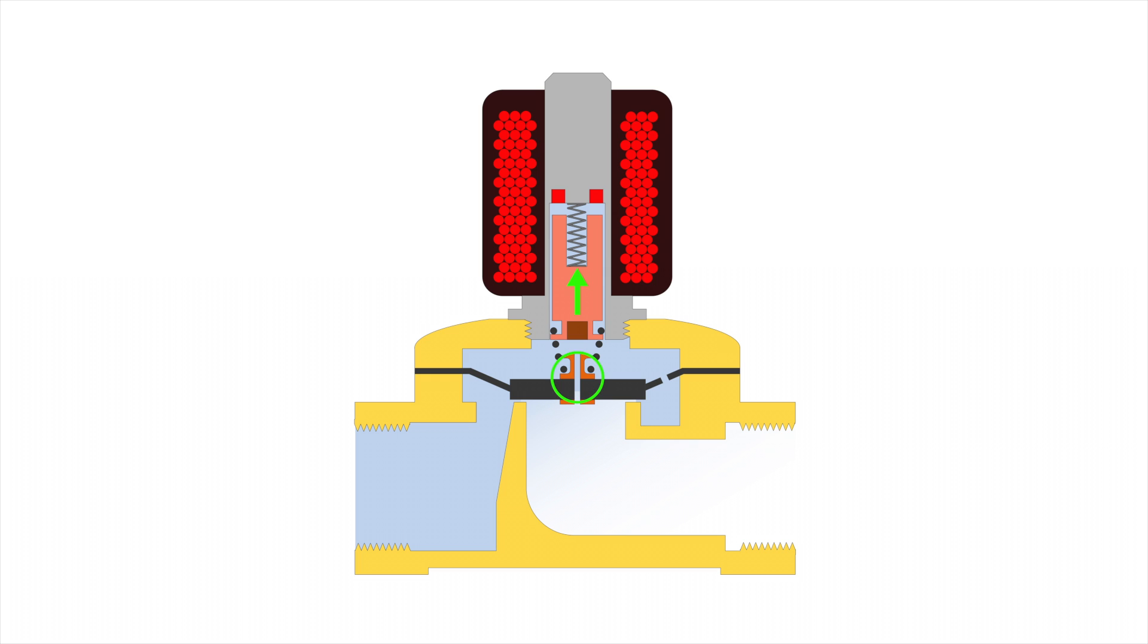At the same time, a small port is opened that connects the upper chamber with the outlet. This allows the pressure in the upper chamber to drop. The resulting pressure differential on both sides of the membrane will assist the lifting of the membrane.